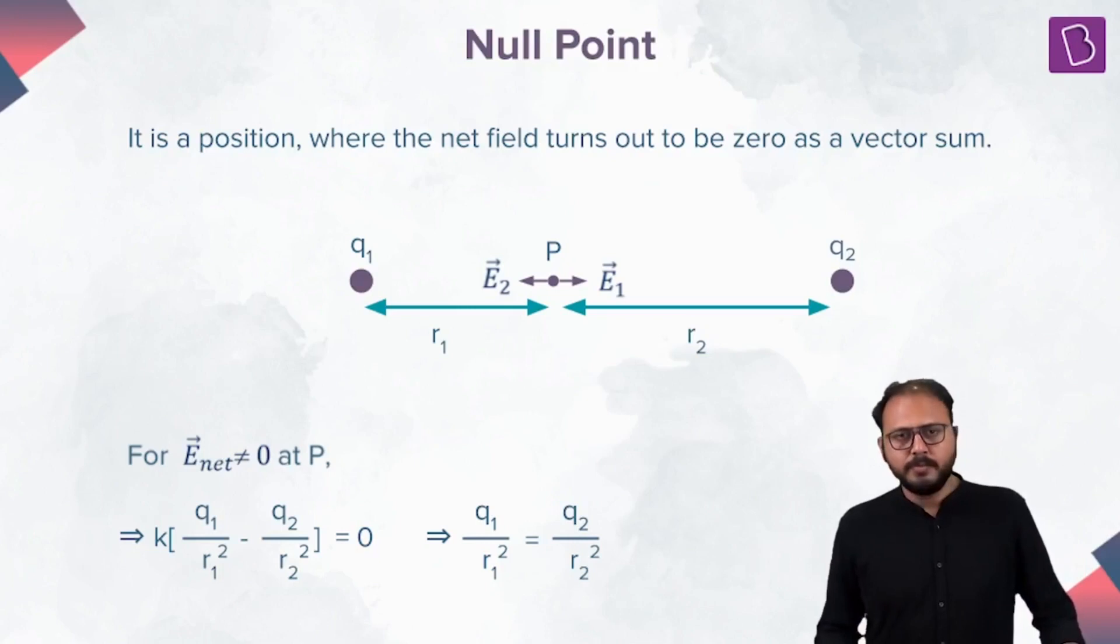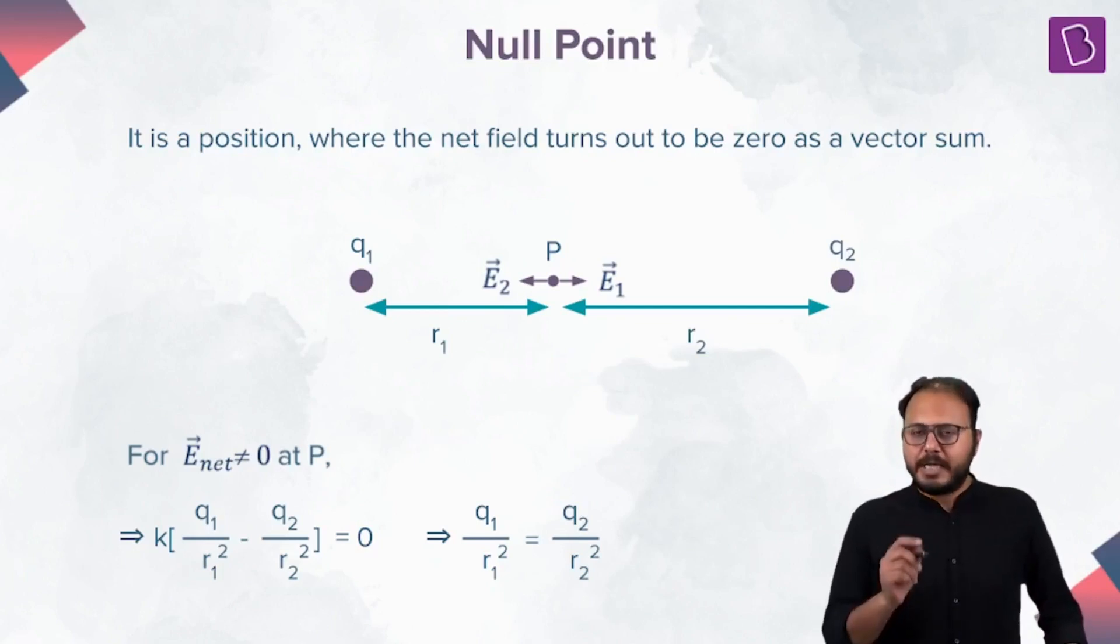You have charges Q1 and Q2. There is a point P along the line joining them where the claim is the point is null. If P is a null point at which equilibrium happens, that means the electric field net value should be zero.